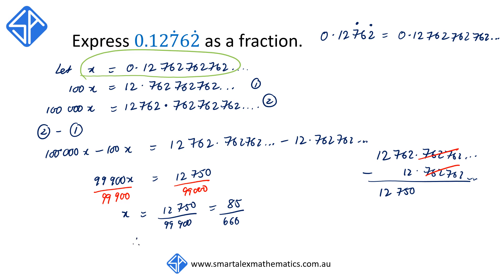Since we started off by defining x as 0.12762762..., this means that x, which is equal to the decimal 0.12762 with the 762 being repeated, is able to be expressed as 85 over 666 as a fraction.